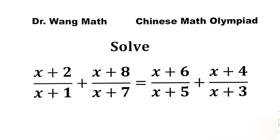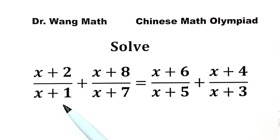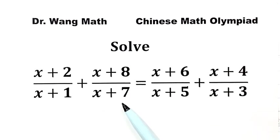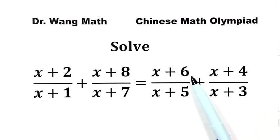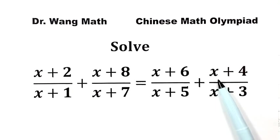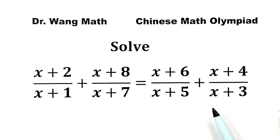In this video, we'll be solving a question from the Chinese Math Olympiad. Solve the equation: (x+2)/(x+1) + (x+8)/(x+7) = (x+6)/(x+5) + (x+4)/(x+3). How do we solve this equation?